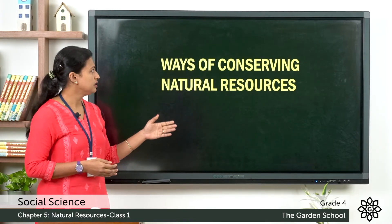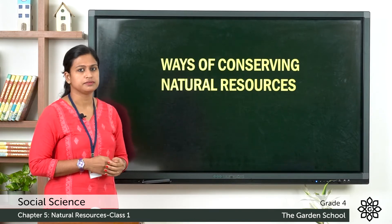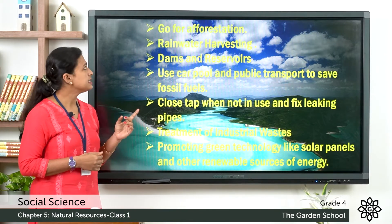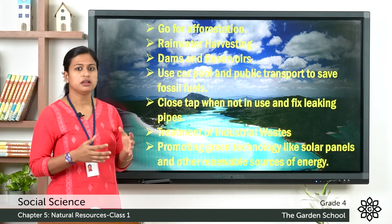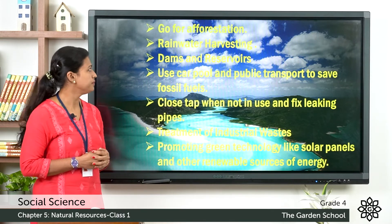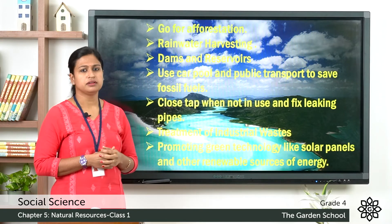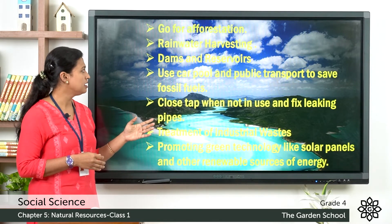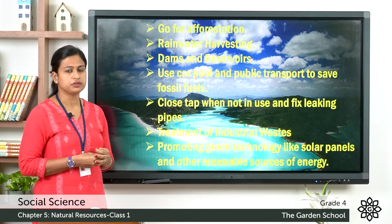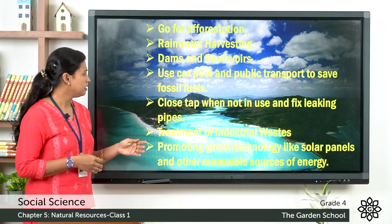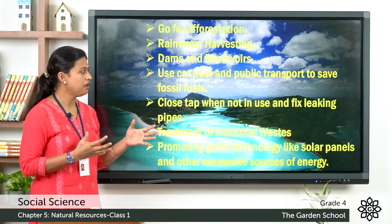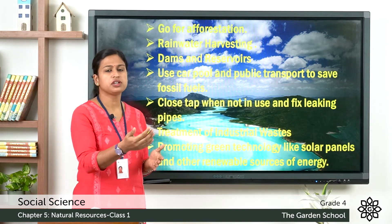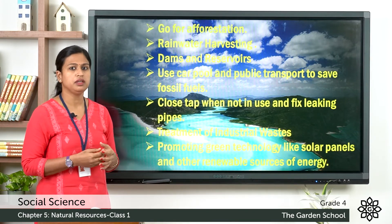Now we will discuss the ways of conservation of natural resources. First, go for afforestation — that means plant more and more trees. Second, rainwater harvesting — collect rainwater for future use. Third, construct dams and reservoirs so that water can be used for agriculture and to produce electricity. Next, use carpool or public transport to save resources. Next, close the tap water when not in use and fix leaking pipes.